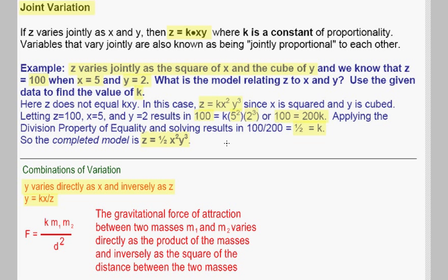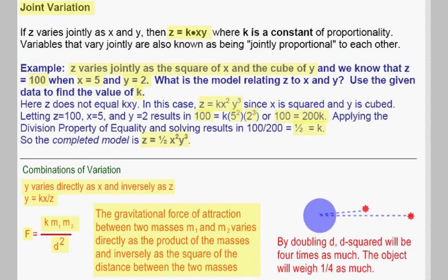Here's another interesting example of a combination of variation. The gravitational force of attraction between two masses, m1 and m2, varies directly as the product of the masses and inversely as the square of the distance between the two masses. So if we let f equal force, f will equal the gravitational constant k times that product, so it's directly proportional to the product and inversely proportional to the distance squared. If we double the distance that object is out in space, d squared will be four times as much. Since d squared is in the denominator, the object will weigh one-fourth as much.